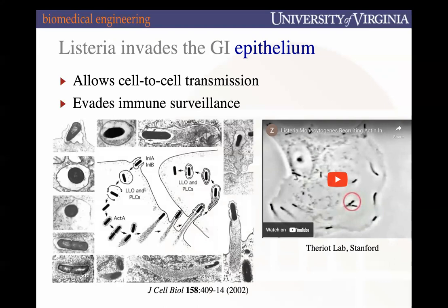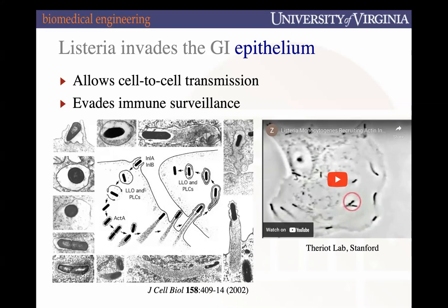The way listeria works is that it invades the GI epithelium — the cell sheet barrier that lines mucosal layers, which has tight junctions that usually don't allow things to cross over. What ends up happening is the bacterium is endocytosed by the epithelium lining. Once within the endosome, it will escape and start shooting around with a comet tail within the cell. It will proliferate and grow, then push through the cell membrane while shielding itself with the cell membrane, allowing it to evade immune surveillance because it's encased by the host cell membrane.